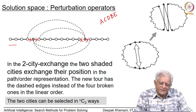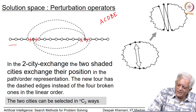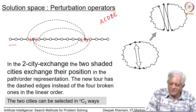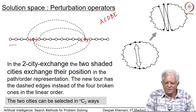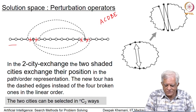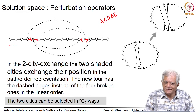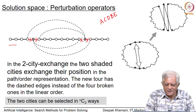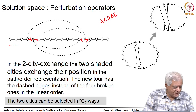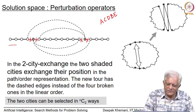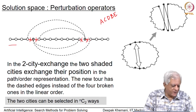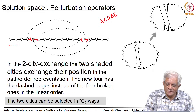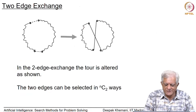How many neighbors does this perturbation operator give you? You can choose two cities in n choose 2 ways, so with five cities you would have 10 neighbors.